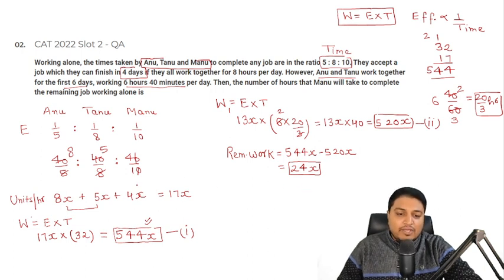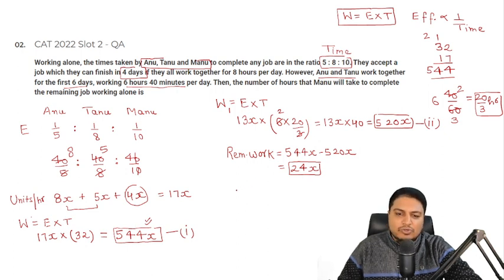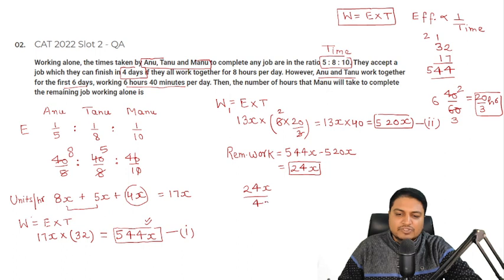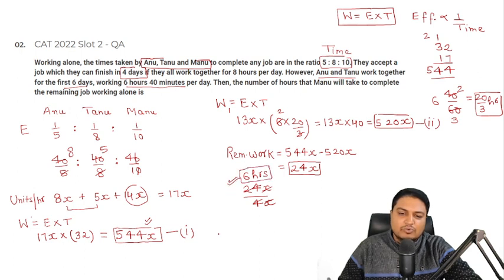Mannu makes 4x units per hour and there are 24x units of remaining work. So the number of hours Mannu will take = 24x / 4x = 6 hours. That is the correct answer.